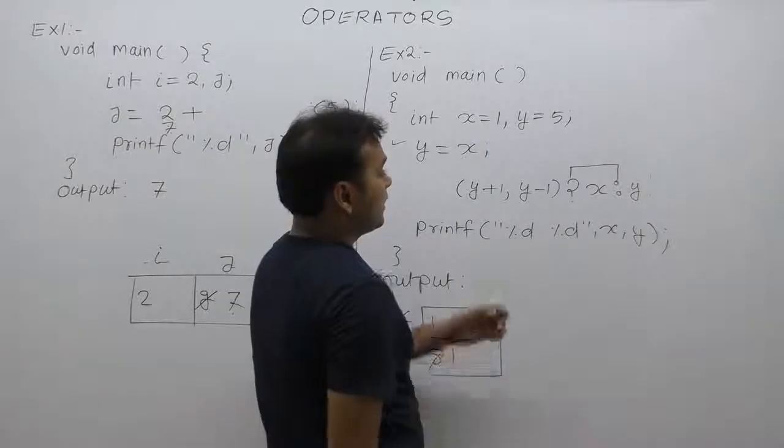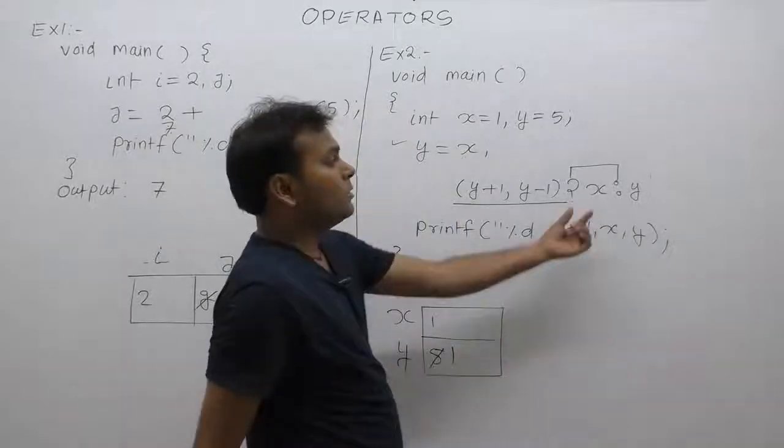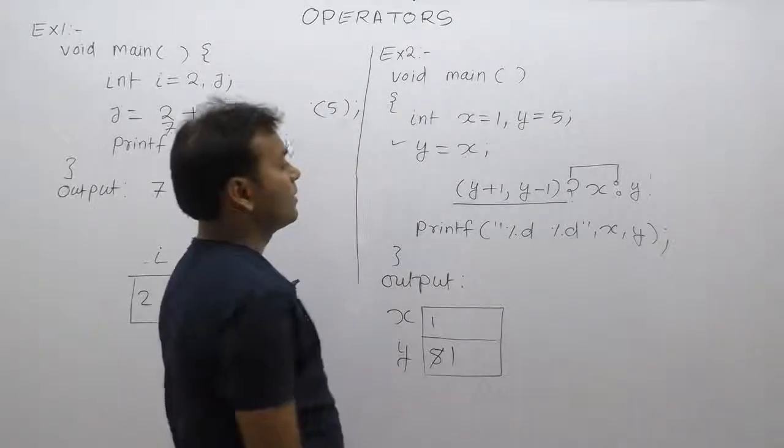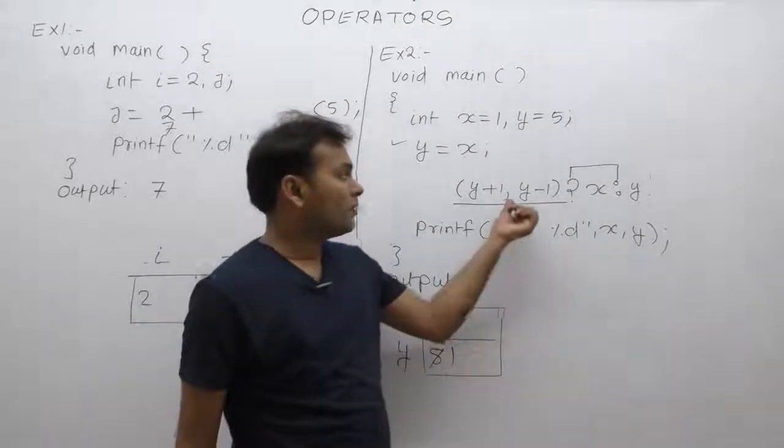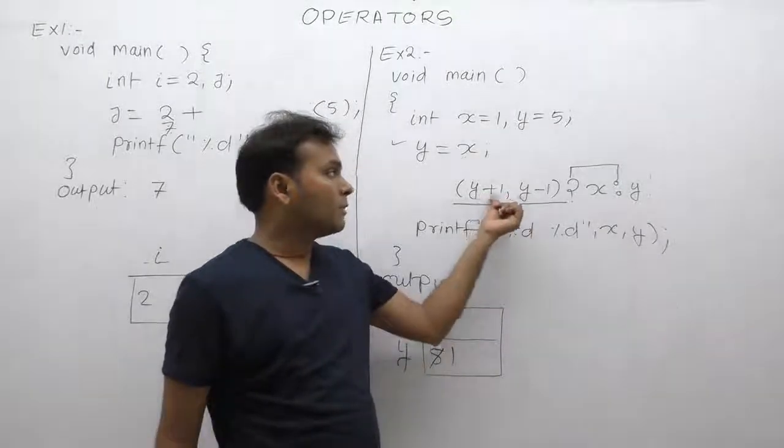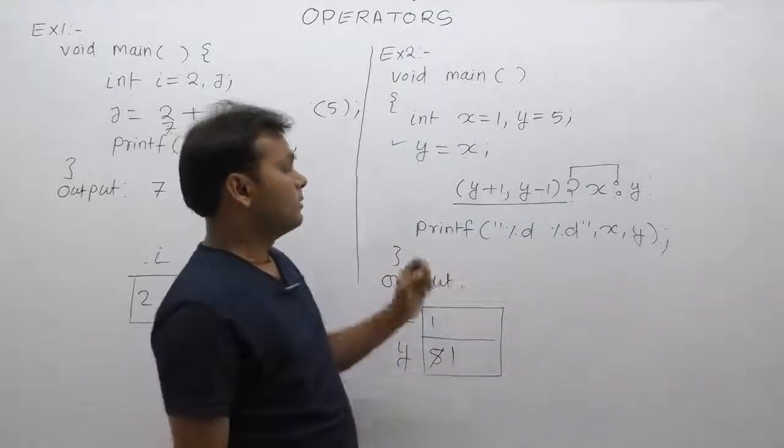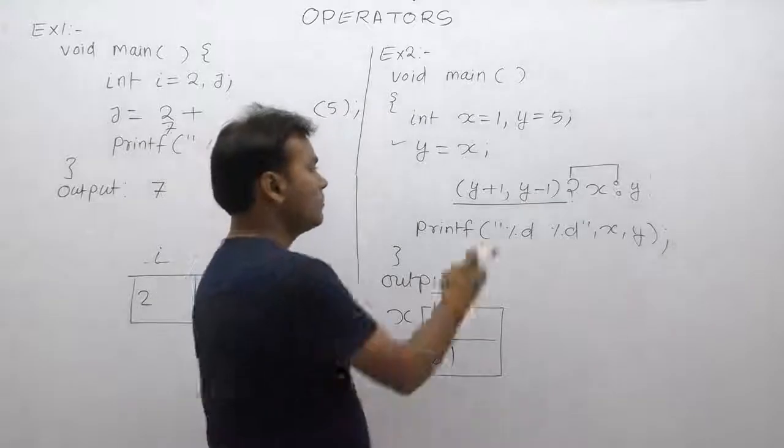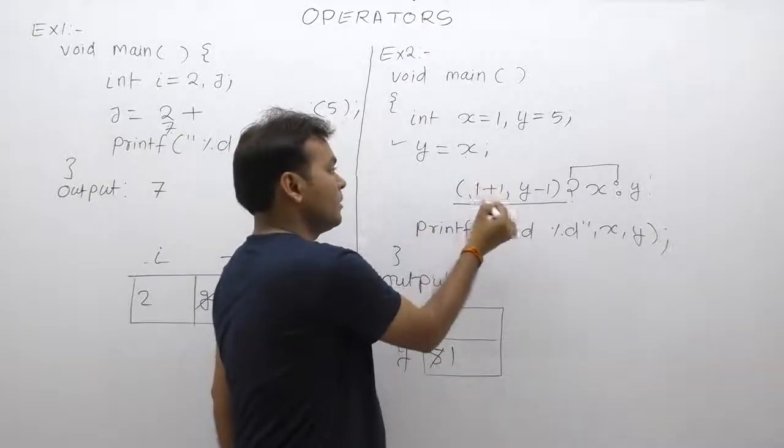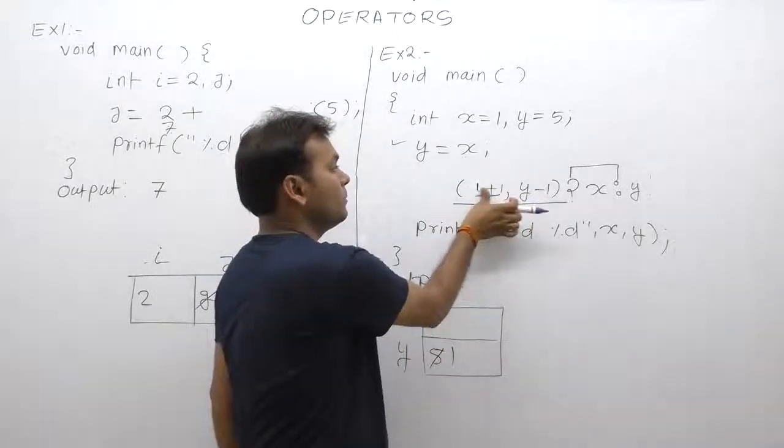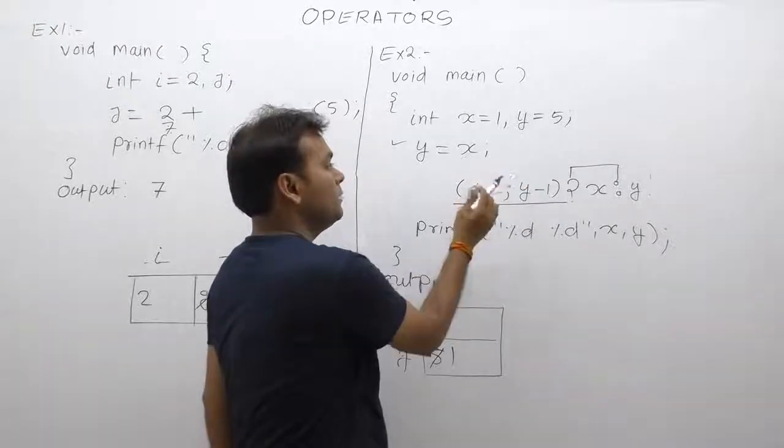Next, again this one whole criteria is considered a condition to this conditional operator. Now, in case of comma, comma has multiple expressions. First condition, y plus 1. Value of y is 1, therefore 1 plus 1 is 2, replace value as 2,